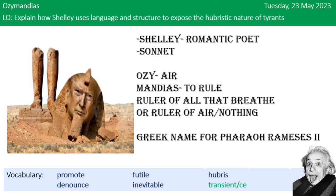Ozy means air, and mandias means to rule, so it implies he is the ruler of all that breathe, or the ruler of air — essentially, nothing.